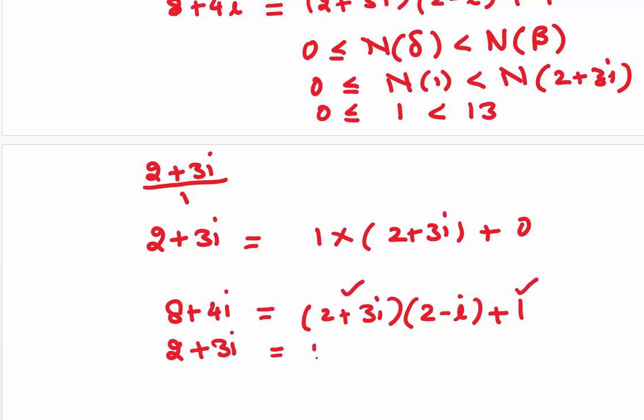Then, we have divided 2 plus 3i by this 1. This 2 plus 3i has been divided by 1. This gives us 1 into 2 plus 3i plus 0. As we have got a 0 as the remainder, we stop.